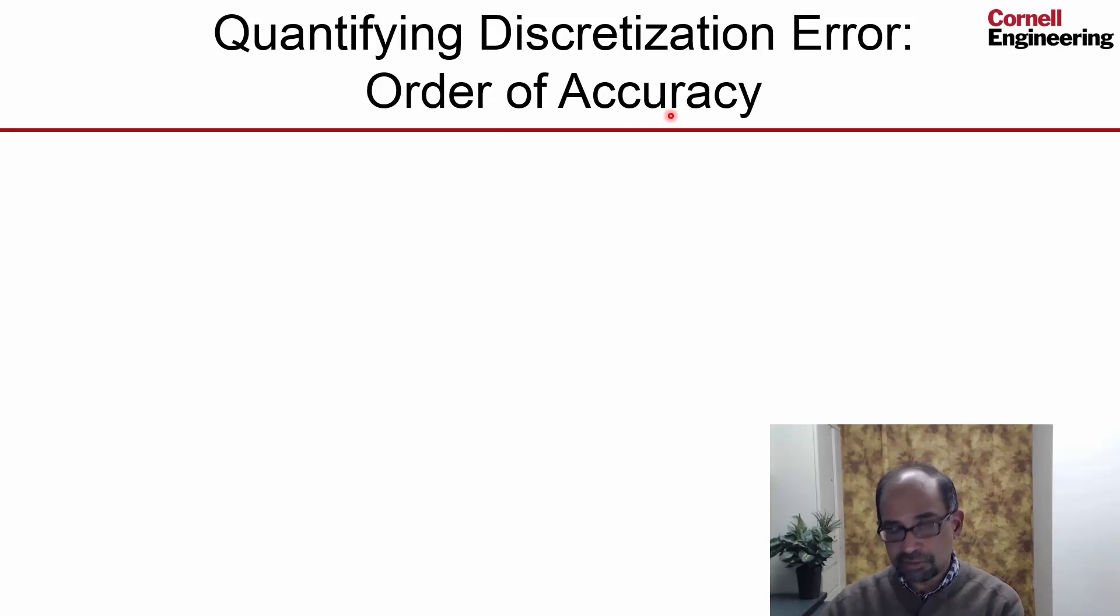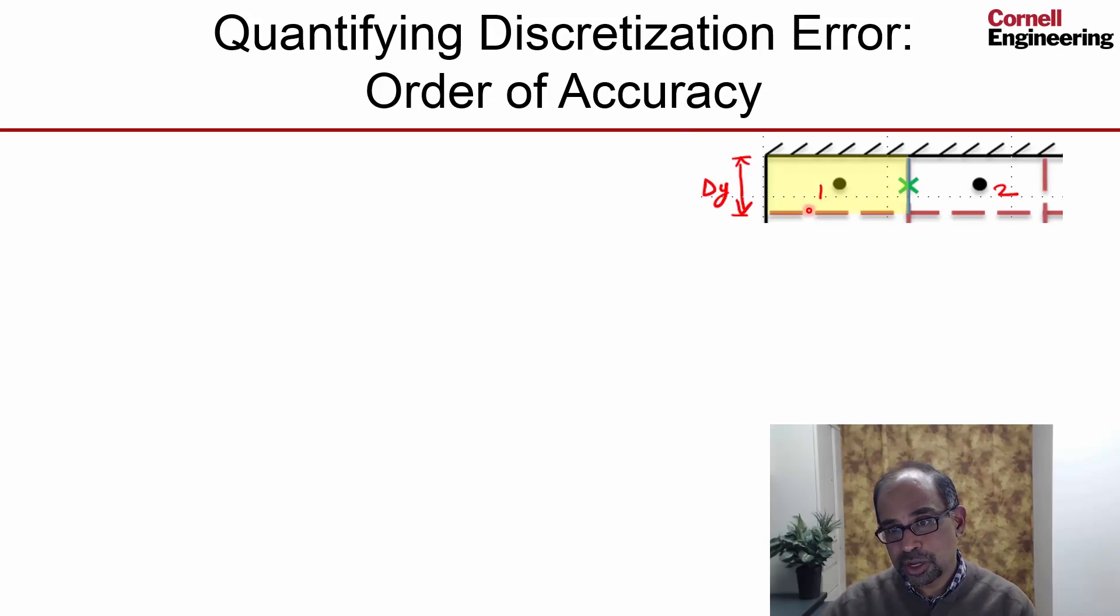To explain this, I will go to the channel mesh that we had and focus on these two cells, cell 1 and cell 2. We had written the algebraic equation for mass conservation for that cell. In that, we had to approximate the value at the green cross, the velocity, the u-velocity at the center of the face as an average of these two values.